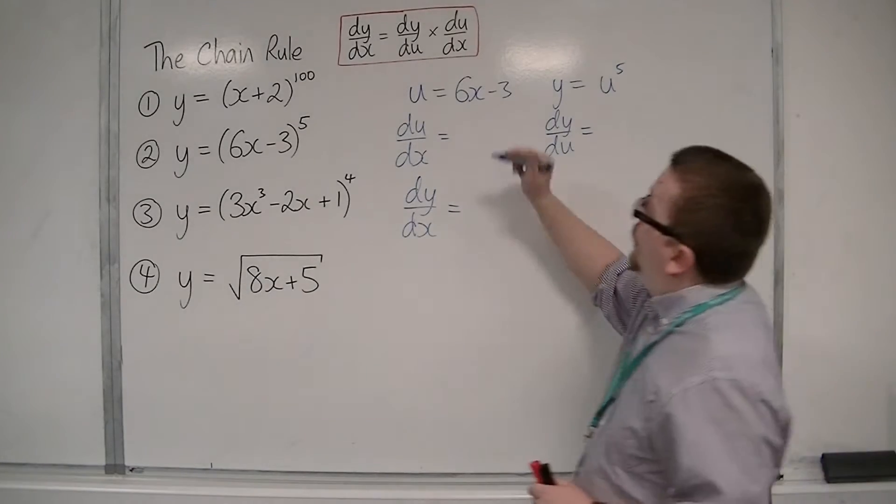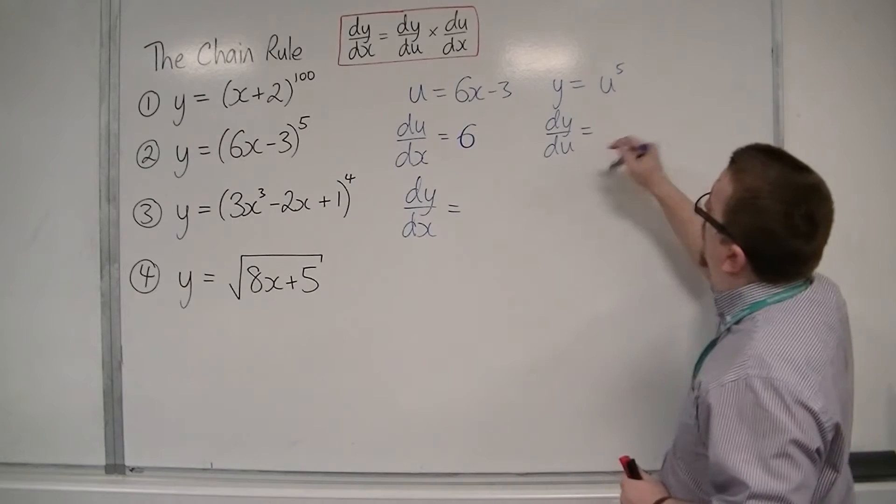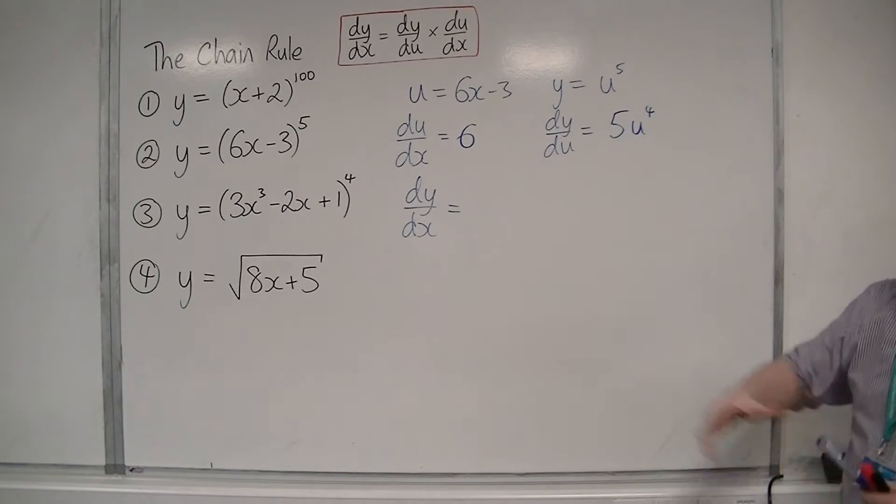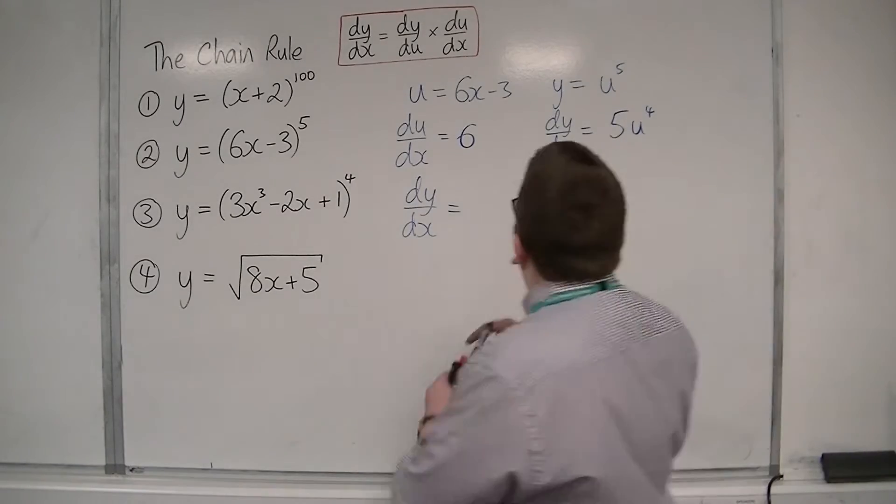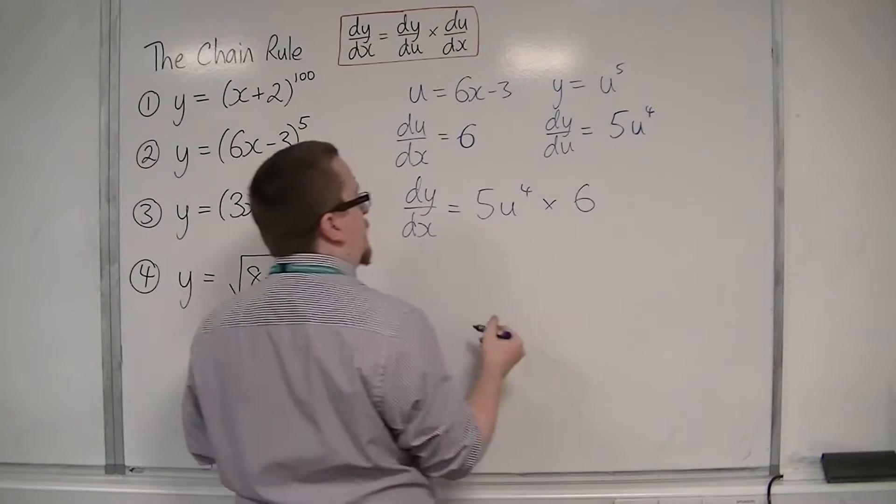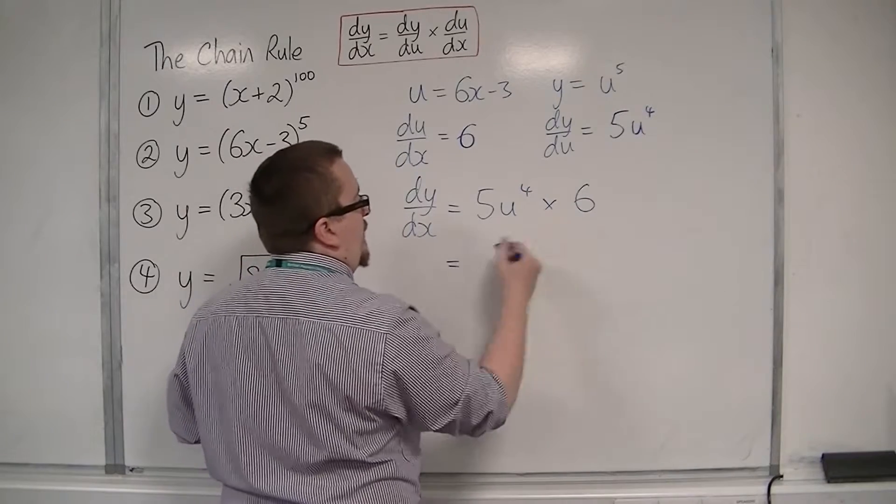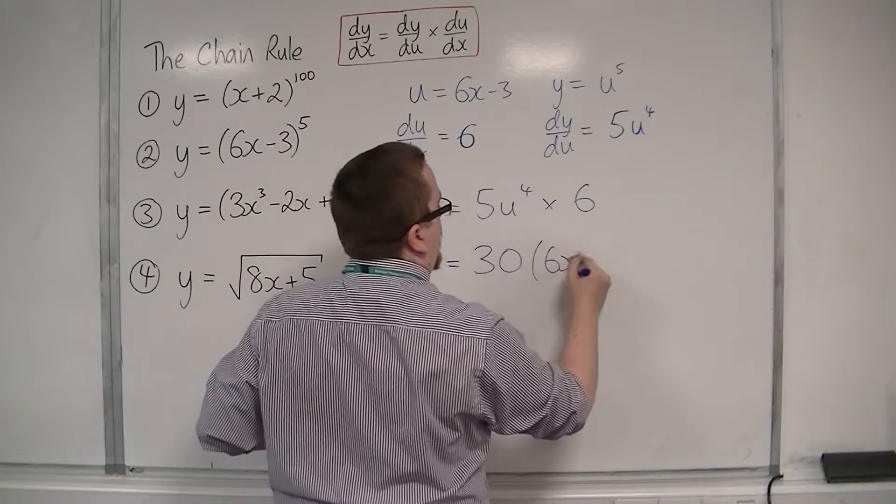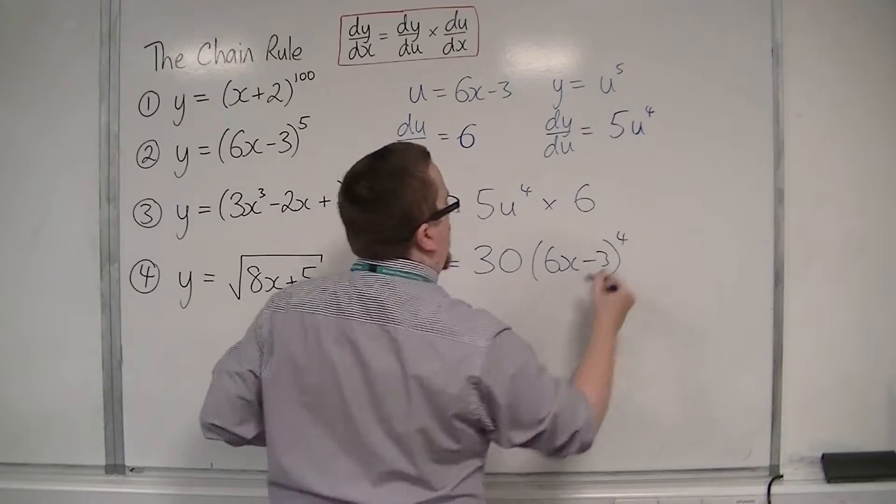du by dx will be 6, and dy by du will be 5u to the 4. So dy by dx is dy by du times du by dx. 5 times 6 is 30, and I'm going to get u, which is 6x minus 3, all to the power of 4.